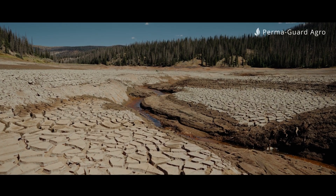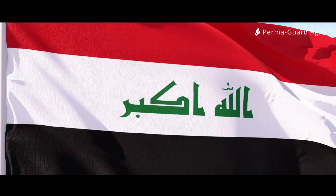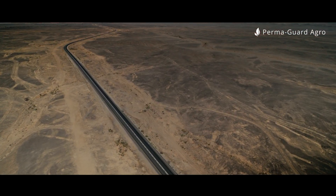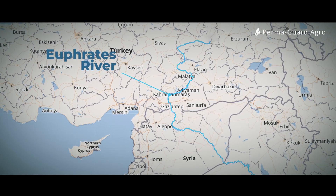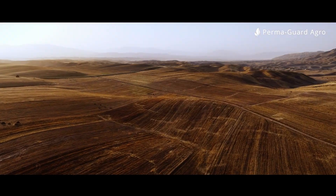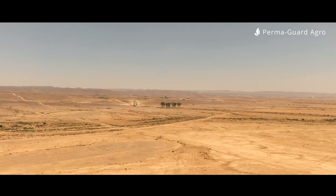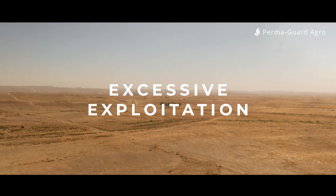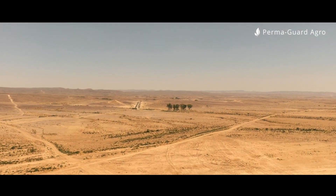One of the most drastic examples is the situation in the Middle East, particularly Iraq. The country has been struggling with severe water shortages for years. The depletion of the Euphrates and Tigris rivers, crucial for agriculture in the region, has led to conflicts on both local and international levels. Iraq is also experiencing rapid desertification, with degradation of agricultural land from both excessive exploitation and climate change leading to sandstorms and reduced arable land.